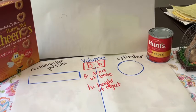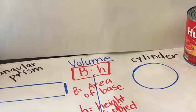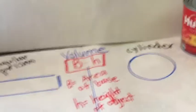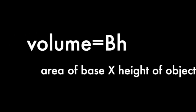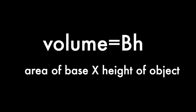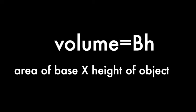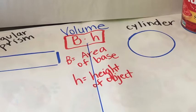The formula for volume is the area of the base times the height of the object. We're going to be using this formula to find the volume of each of our objects.